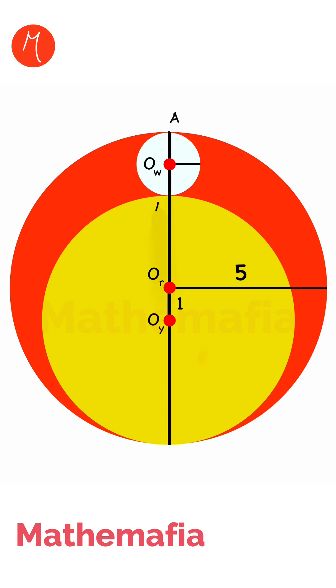Let's call it A, let's call it B, and let's call this point C. We can see that OrC is the radius of the red circle, so its value will be 5. From here we can conclude that OyC is 5 minus 1, so this will be 4. This is the radius of the yellow circle.